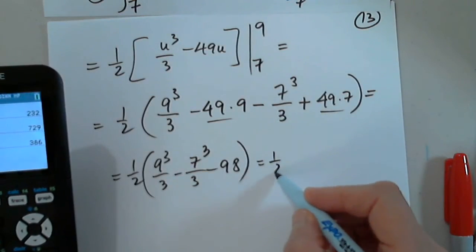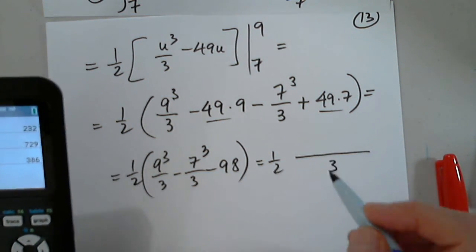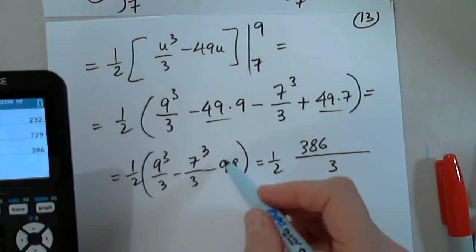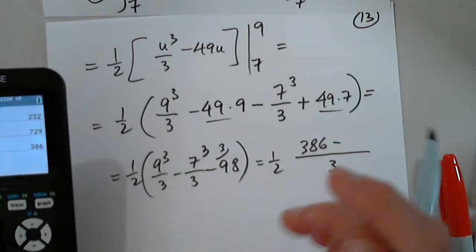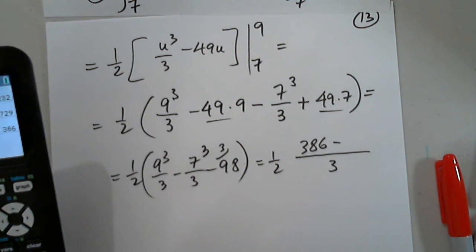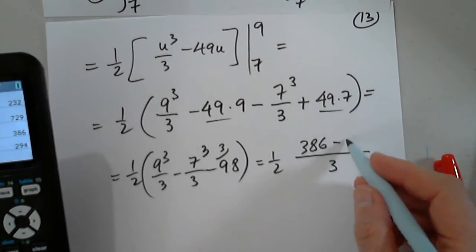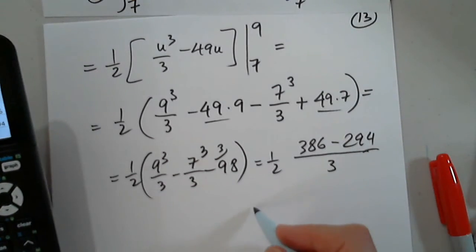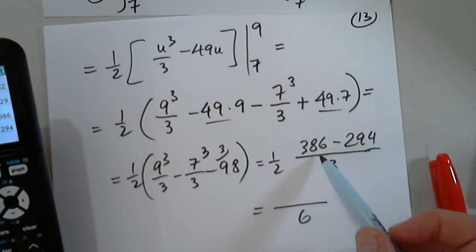Okay, so I got one half in front, 3, 386, and I multiply this by 3, minus 3 times 98. So 294. Okay, so the denominator is 6, and what do I get at the top? I get a 2, and I get a 9.